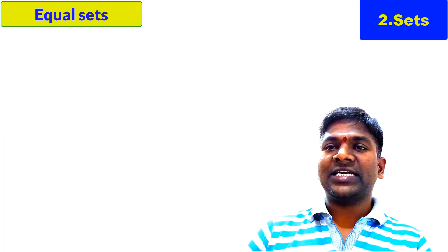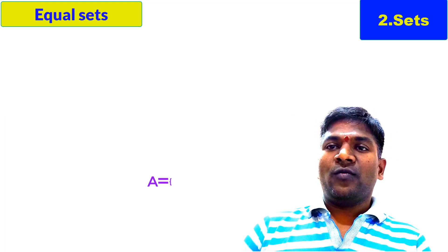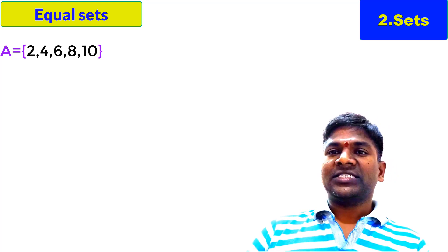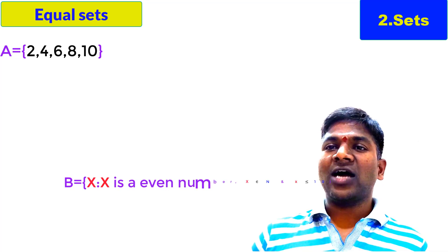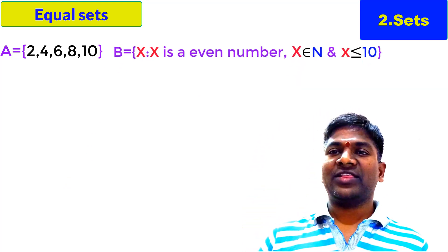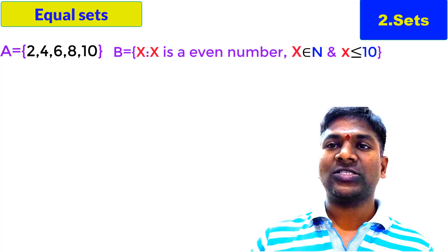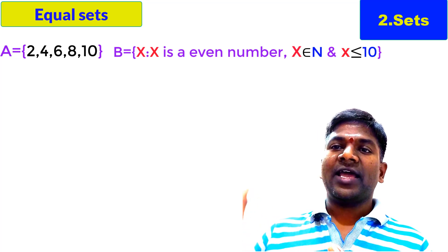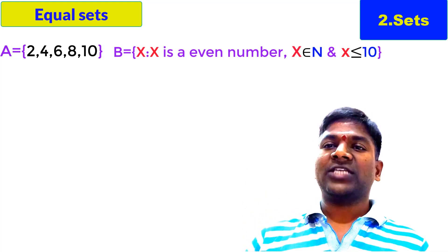Suppose you take set P. This set consists of the elements 2, 4, 6, 8, 10. And set B is defined as {x such that x is an even number, x belongs to N, x less than or equal to 10}. This is the B set. Let us try to understand whether these two sets are equal or not. Already set P is in roster form, so it is very clear — P consists of the elements 2, 4, 6, 8, 10. Set B is in set builder form: x such that x is an even number, x belongs to N, x less than or equal to 10.